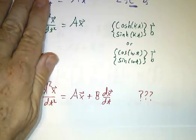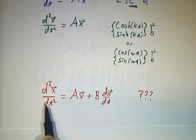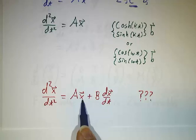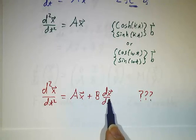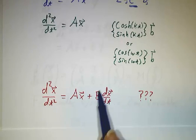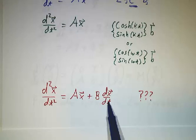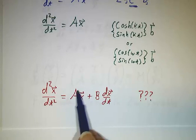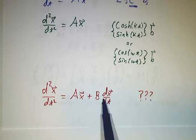But what if somebody gives you a differential equation of the sort where the second derivative is a matrix times x plus another matrix times the derivative of x? This happens a fair amount in the real world. This might be related to friction, for example. This might be a restoring force from a system of springs, and this is the friction. So what happens then?